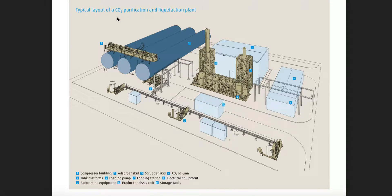Typical layout of a CO2 purification and liquefaction plant. Compressor building is number one, which is here. Absorber skid is number two, here. Three is scrubber skid. Four is CO2 column.